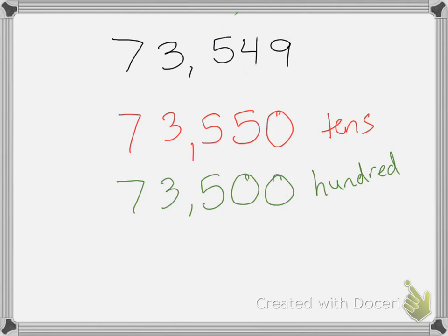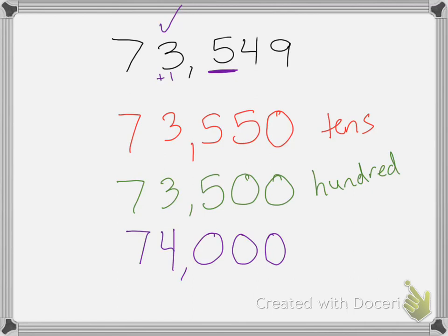Let's round it to the thousands place. We check the thousands and look to the right — I have a five. Is five, five or more? Yes, it is. So we add one to the thousands place; that becomes a four. The seven stays the same, and the hundreds, tens, and ones places are all turned to zeros. So rounding this number to the thousands place would be 74,000.